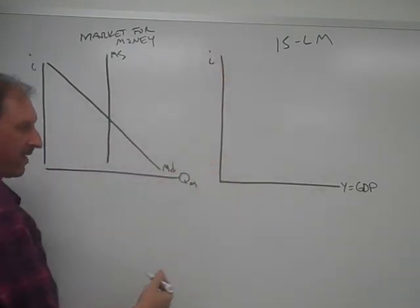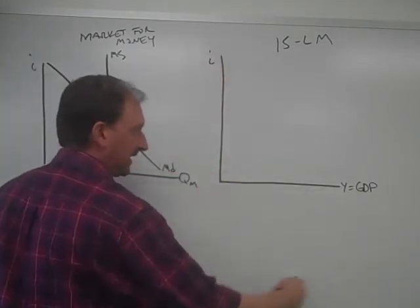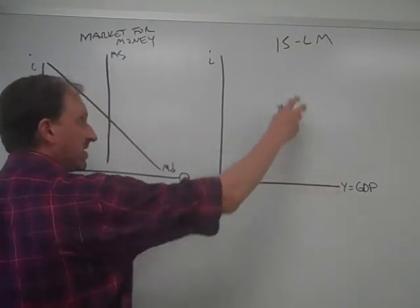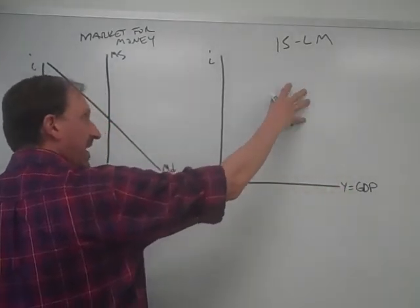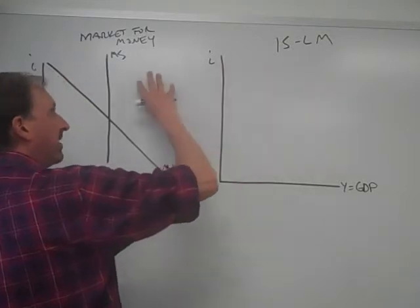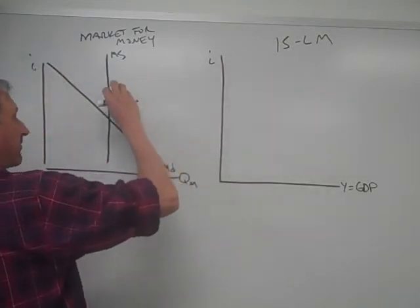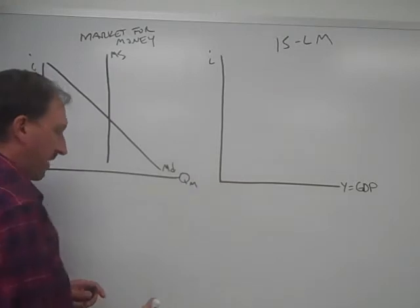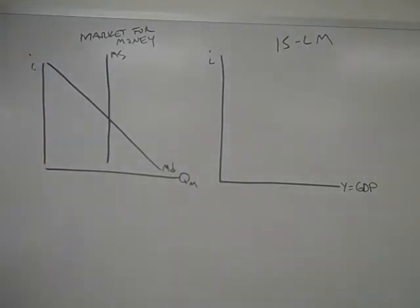Before, we looked at the AE model and how this axis on GDP informed this axis. So this is a neat model because the IS-LM model is getting part of its information from the market for money and part of it from the AE model. Anyway, we'll put all that together in the next module. But let's start here with the market for money.